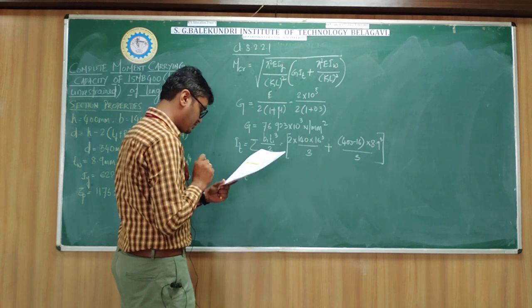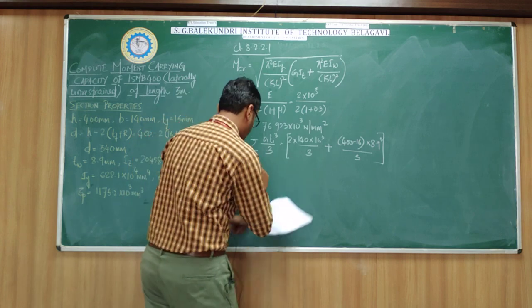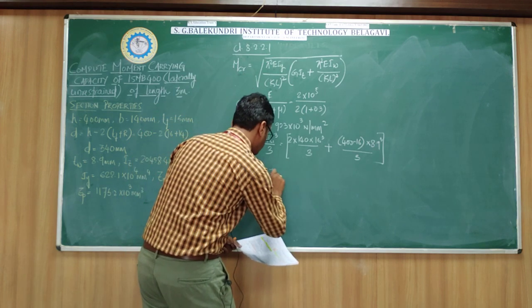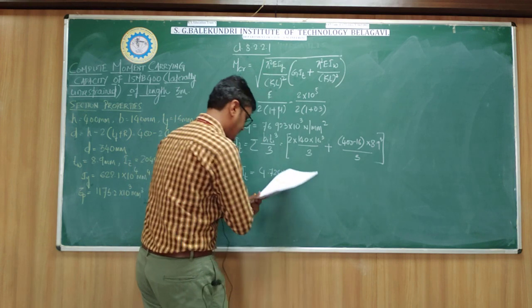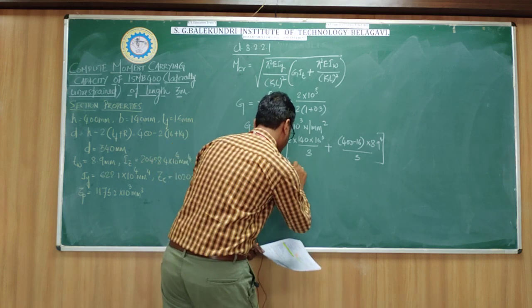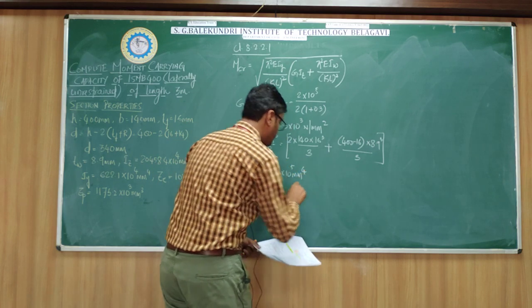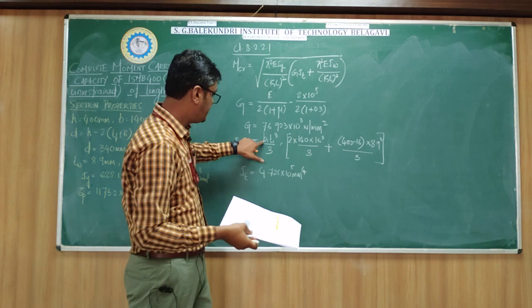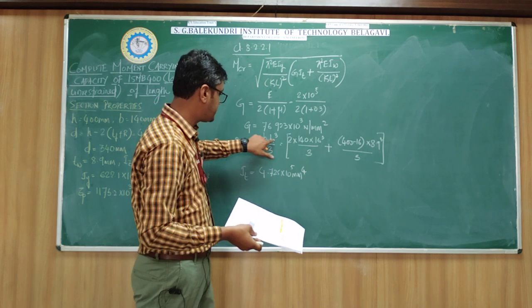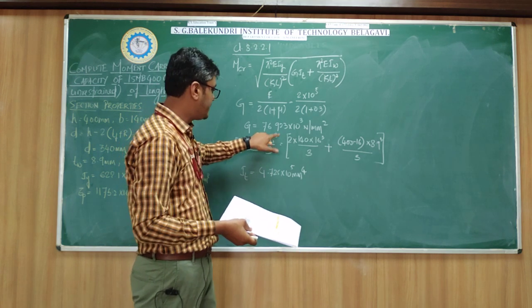If you solve this, you will get torsional constant as 4.725×10⁵ mm⁴.